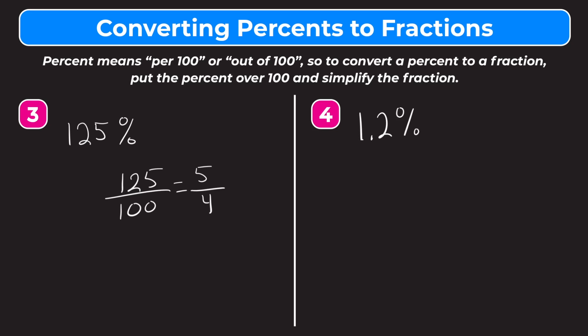So if you're allowed to leave your answer as an improper fraction, 5/4 would be your answer. And if you're asked to convert that to a mixed number, that would be 1 and 1/4. So your answer is either 5/4 or 1 and 1/4.